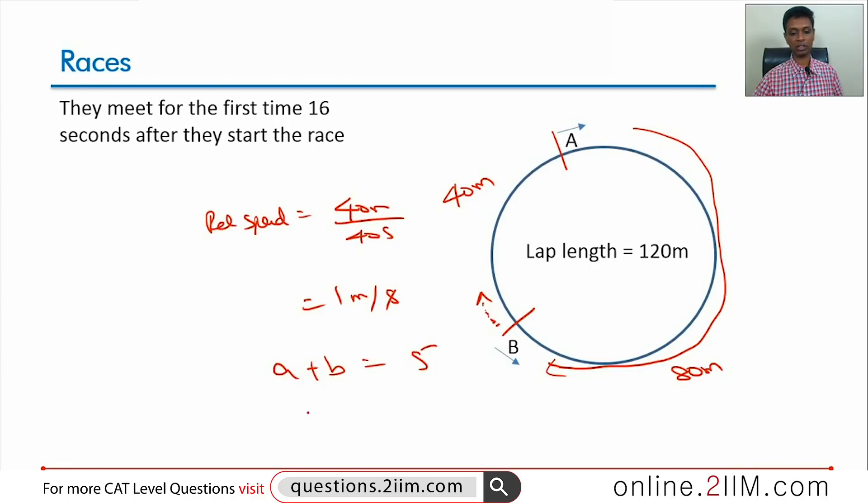A plus B is 5, B minus A is 1. Solve for A and B: A is 2 meters per second, B is 3 meters per second. We can answer any question after that. We found their speed.